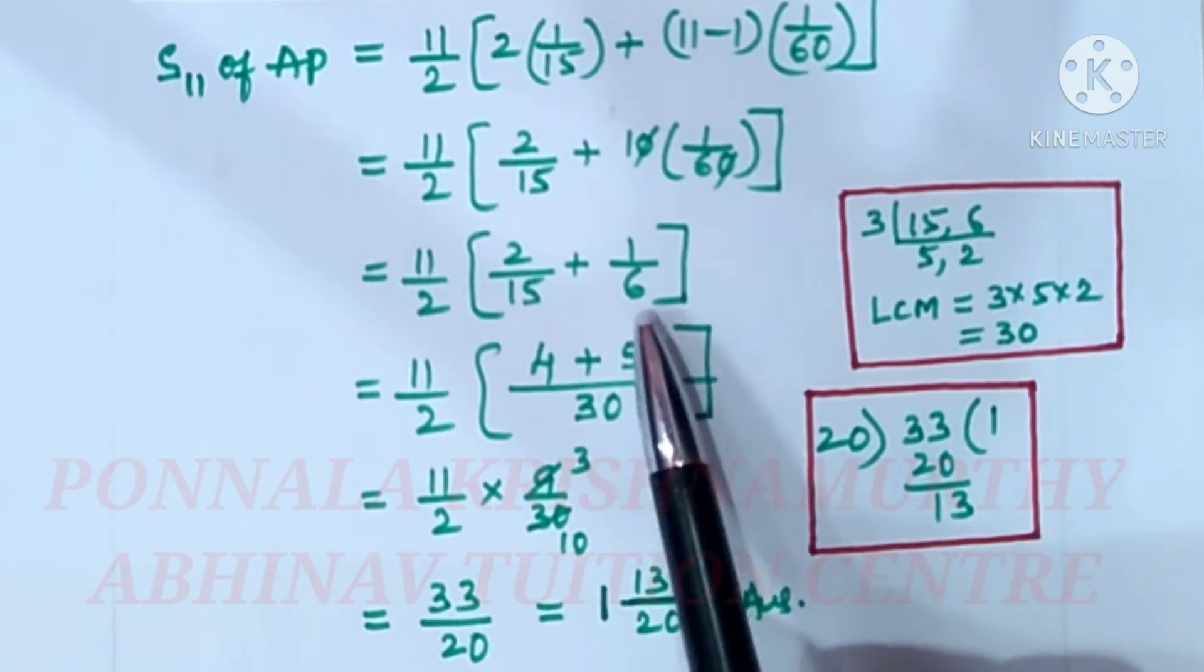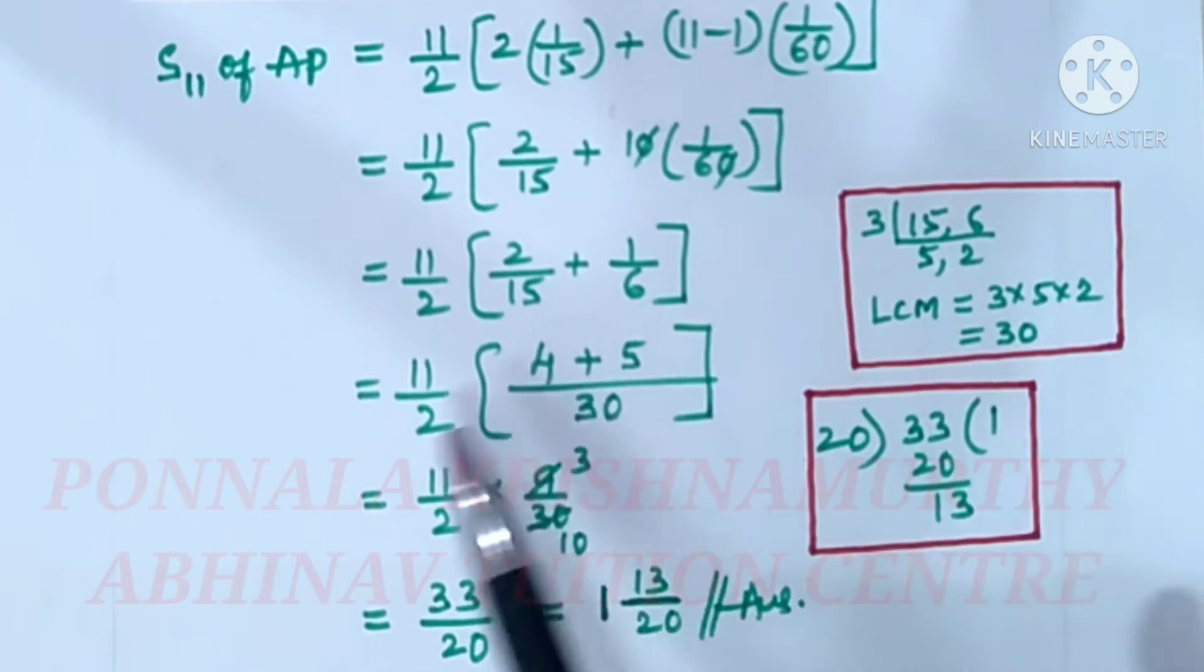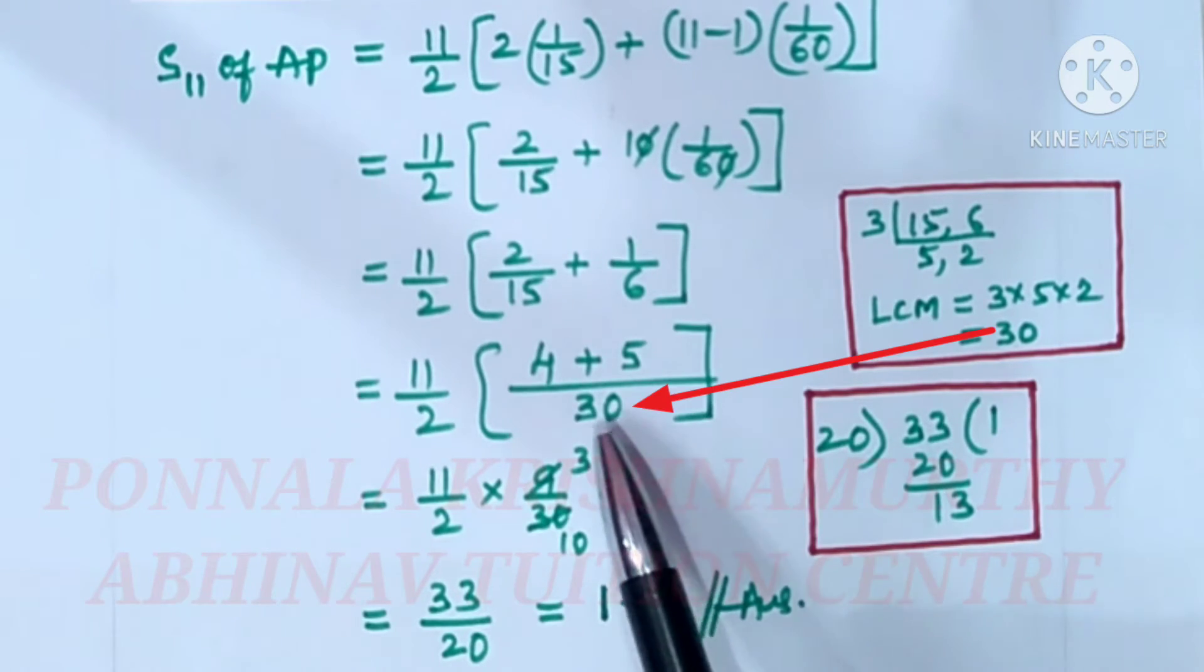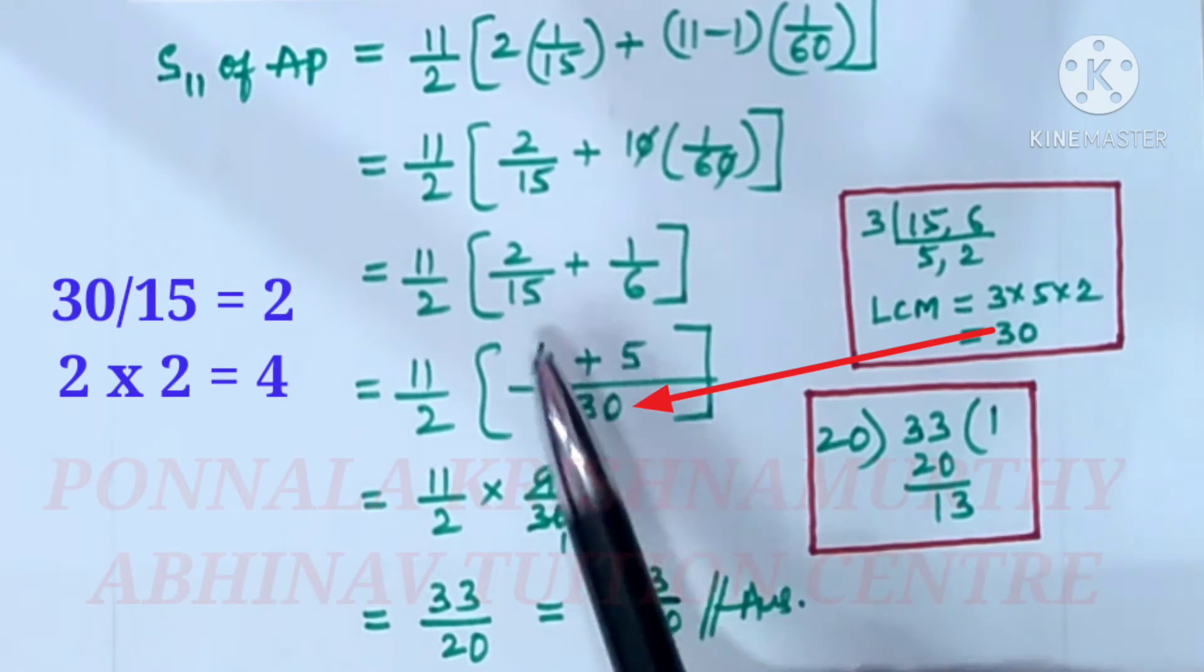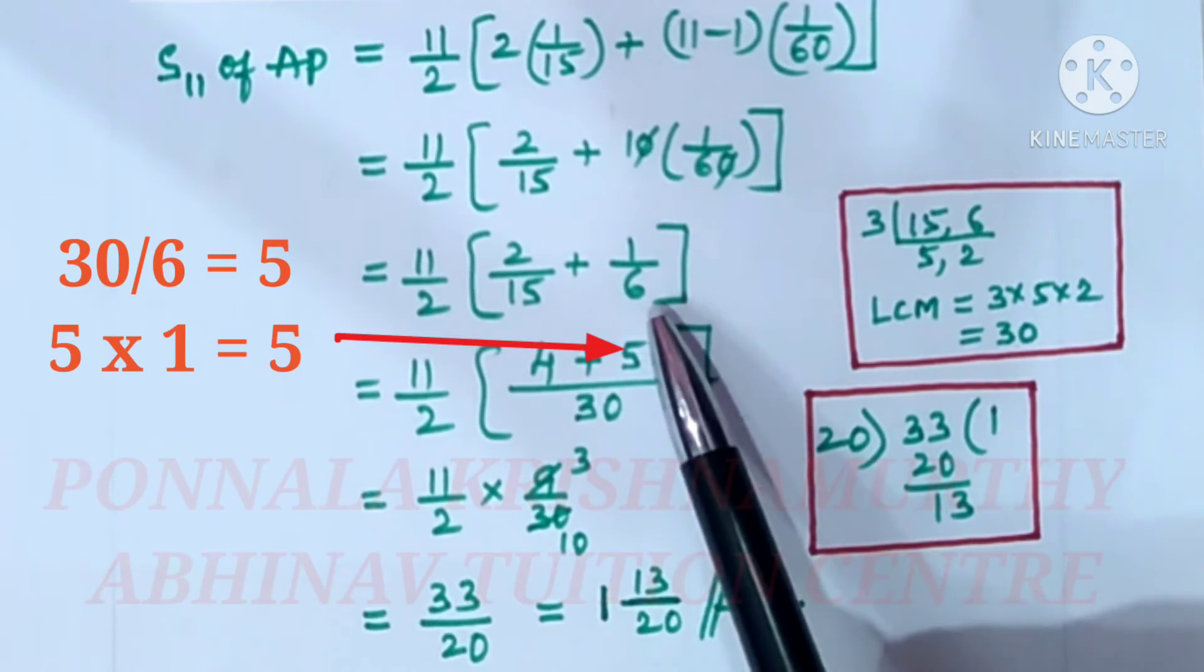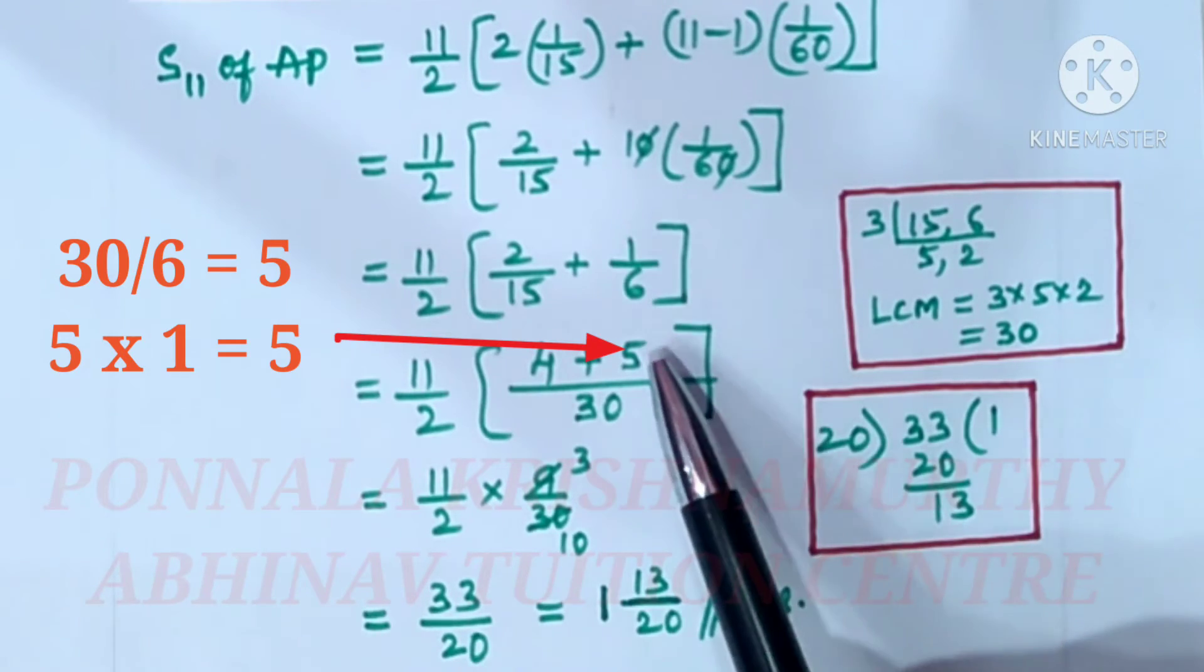LCM for 15 and 6 is 30. 11/2 times [30 by 15 is 2, that 2 into 2 is 4, plus 30 by 6 is 5, that 5 into 1 is 5].